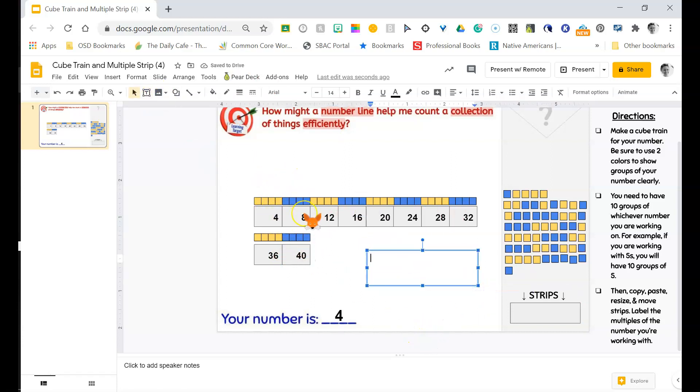I know that I have 10 groups of 4 and I know that that equals 40. So you can see that we're starting to work our way towards really deeply understanding what multiplication is. Awesome.